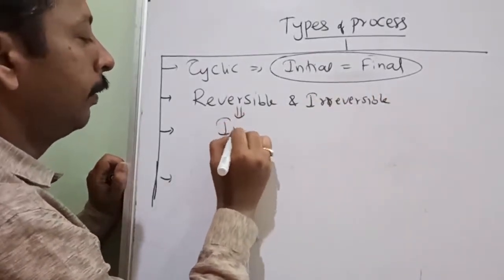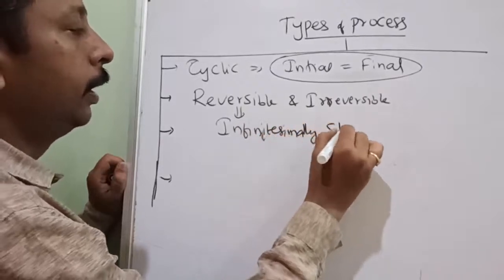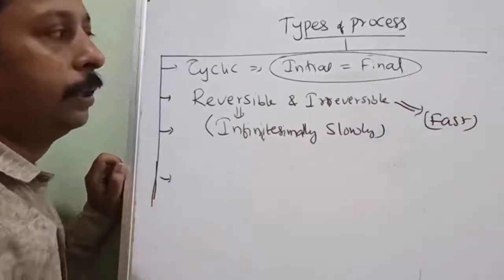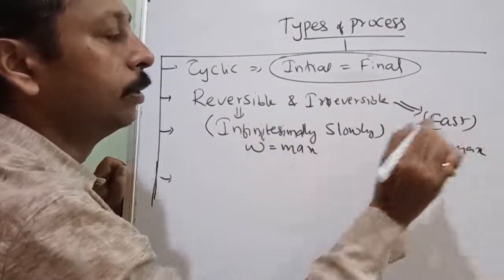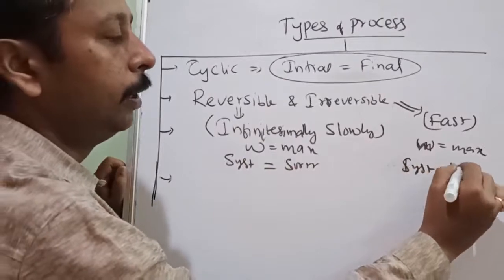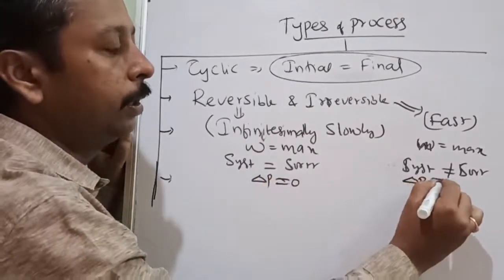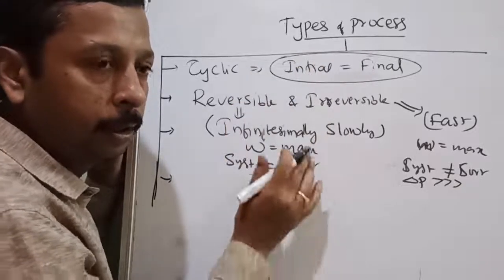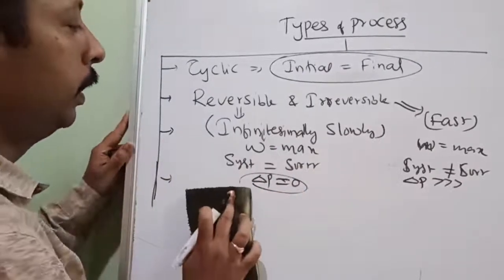If a process is carried out infinitesimally slowly, it is called reversible. The system is in equilibrium with its surroundings at every step, and delta P is almost equal to zero. In an irreversible process, the system is not in equilibrium with surroundings; delta P is very large. For example, sudden expansion or sudden compression means there is a large pressure difference — that is irreversible. In irreversible process, delta P equals the surrounding pressure.